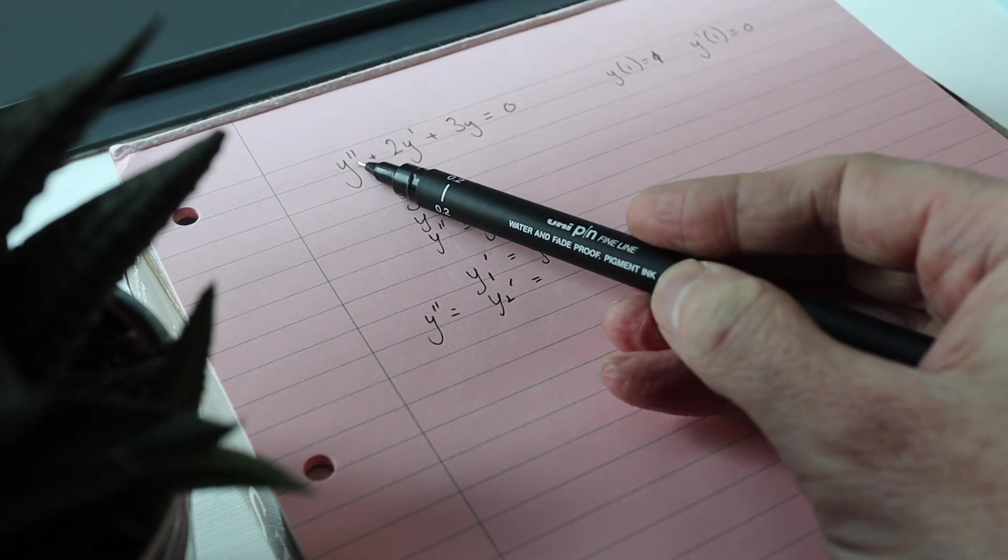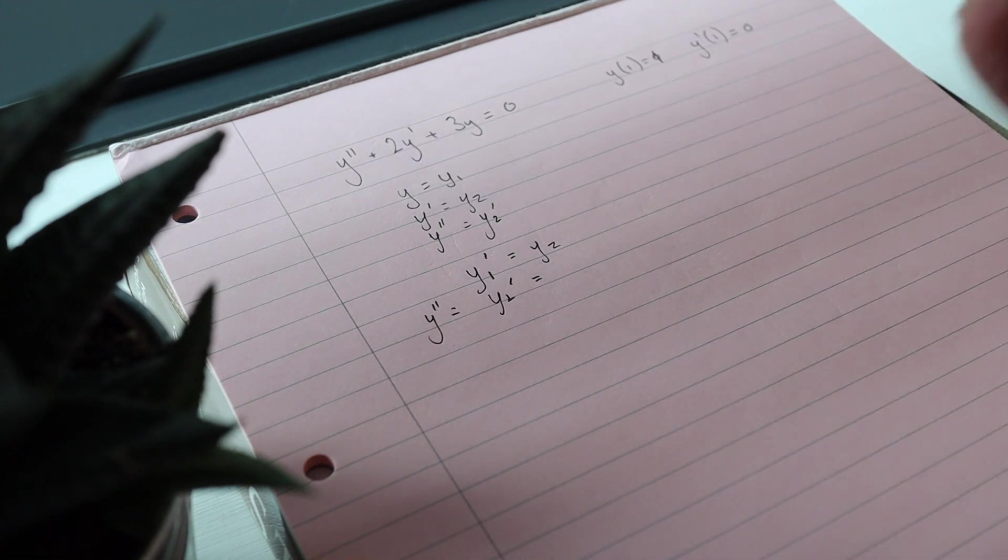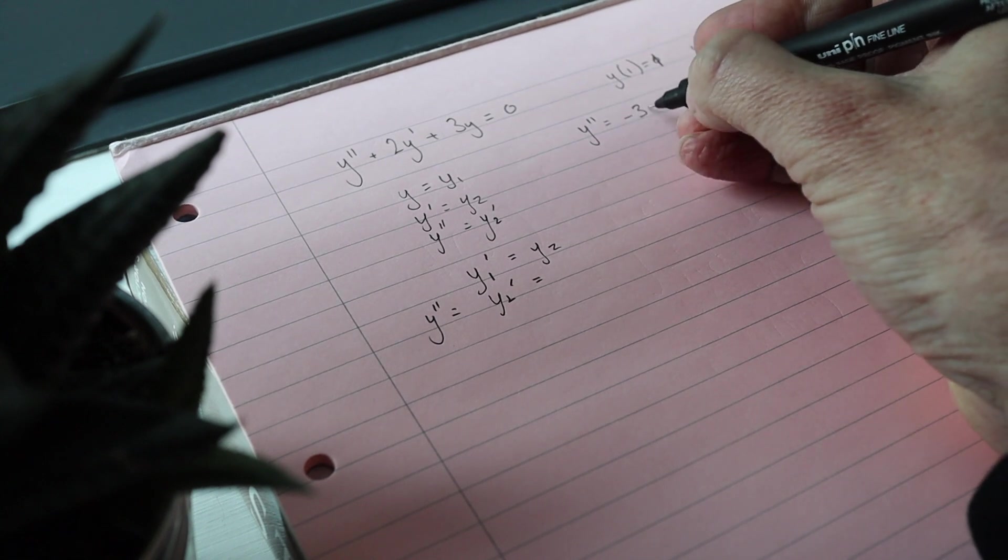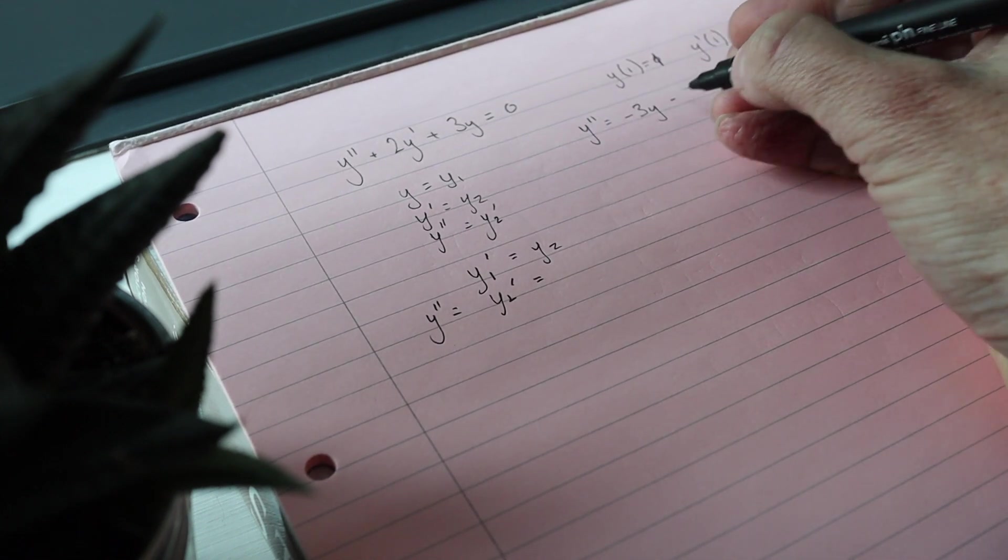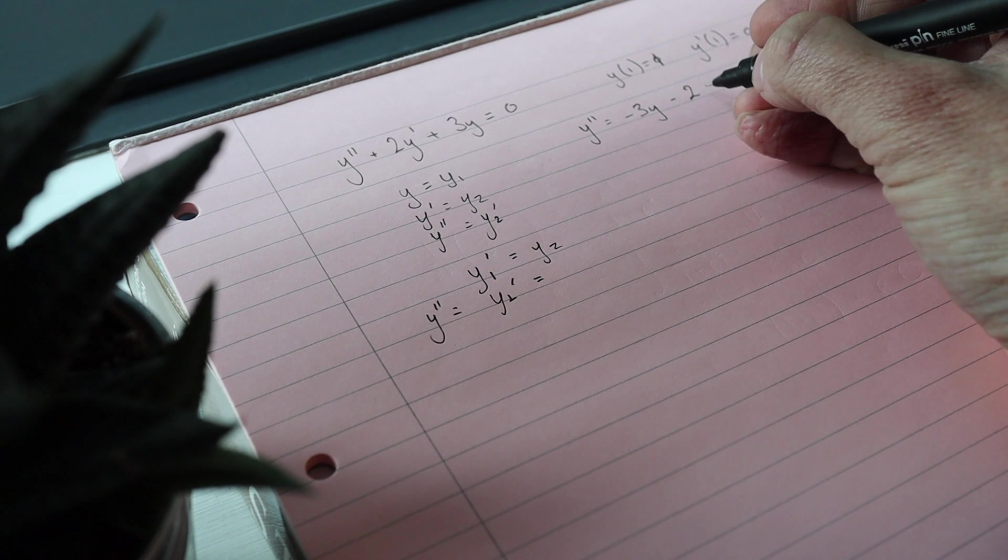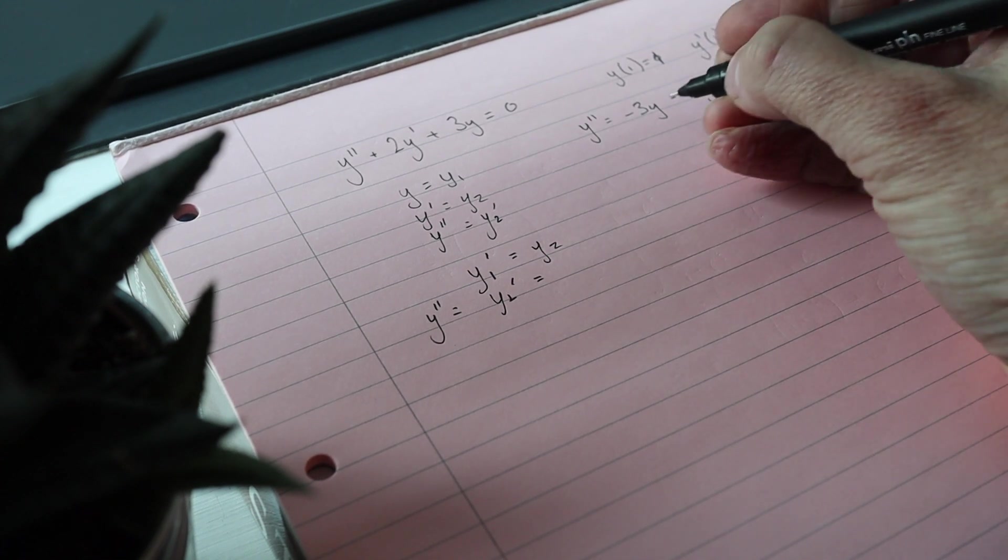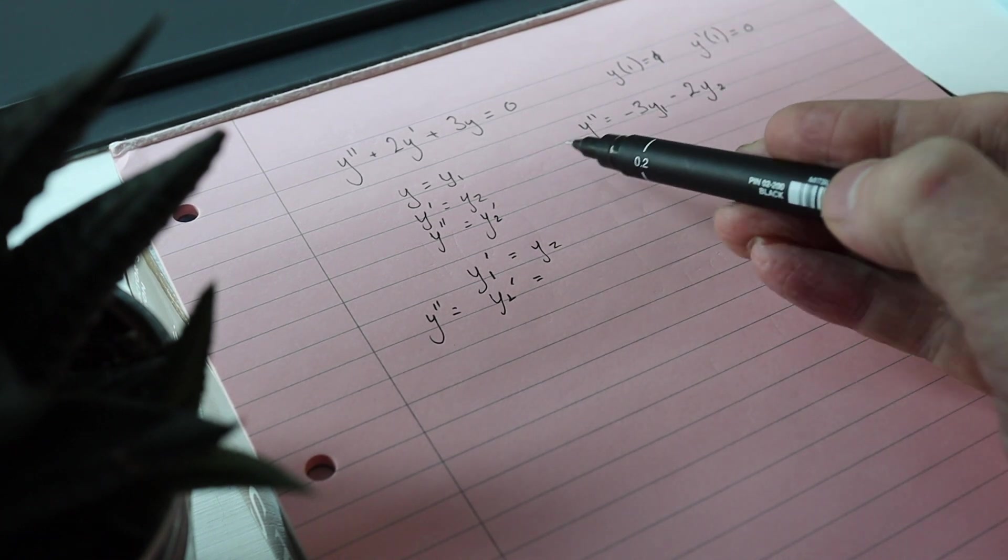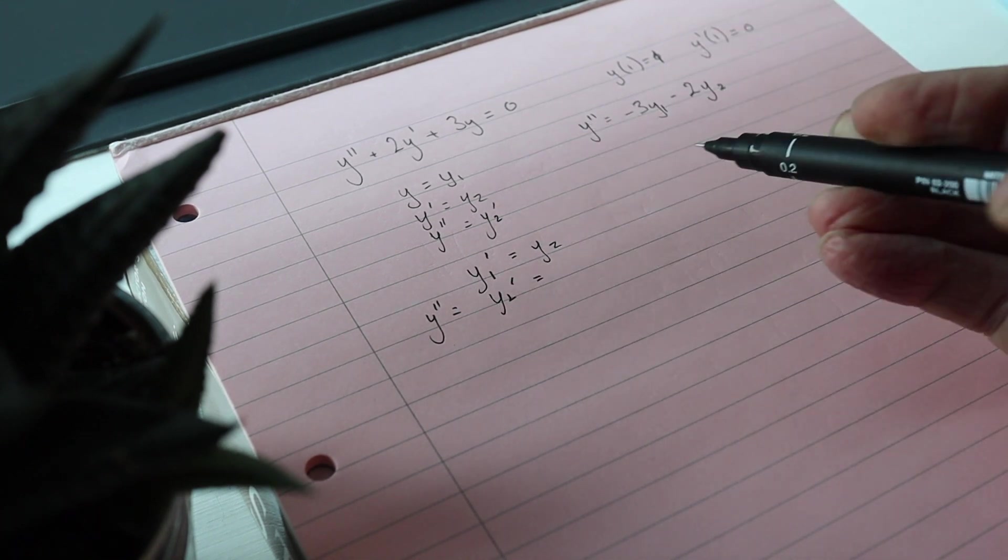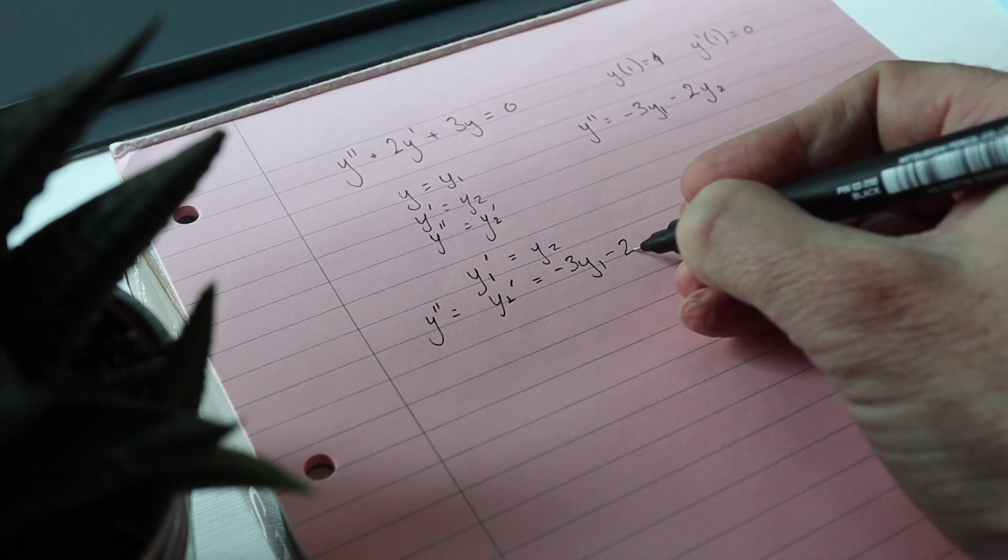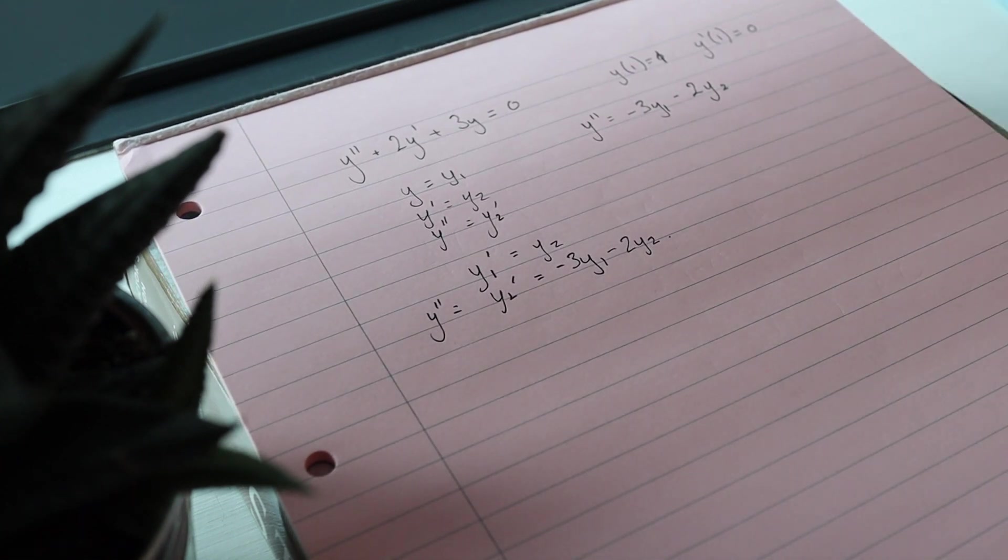Now I'm gonna get that by rearranging this. So the original equation y double dashed equals negative 3y minus 2y dashed. Y dashed is y2 and y is y1, so y double dashed which is y2 dashed is minus 3y1 minus 2y2. And that's it, I've written it as a system of first order differential equations.